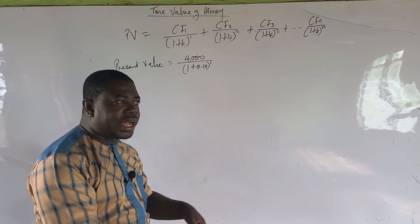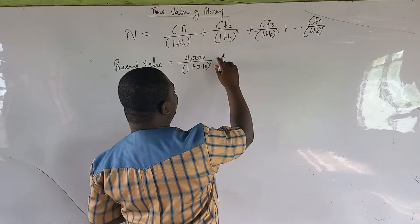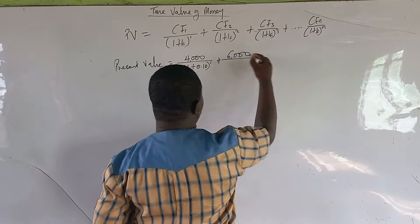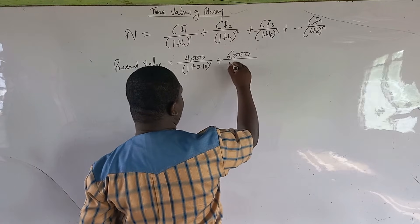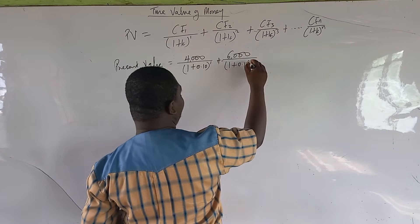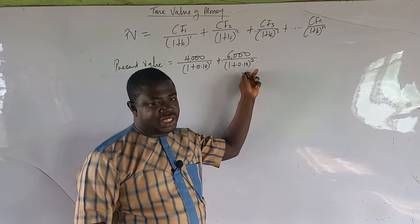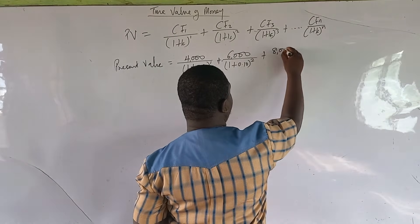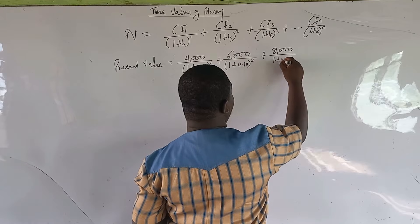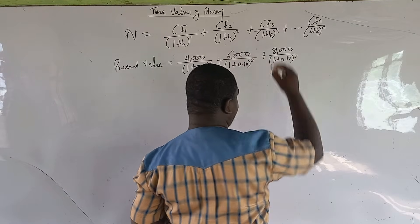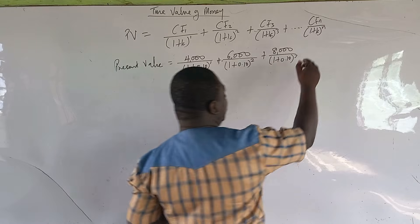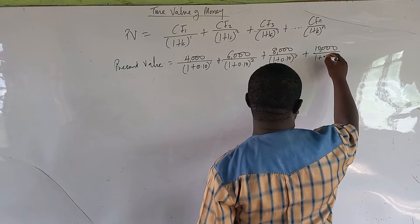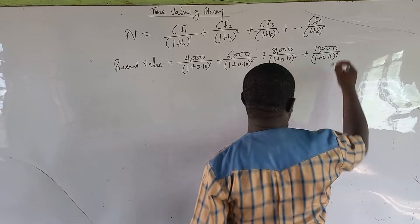In year one, the expected cash flow is 4,000 Ghana cedis divided by (1 + 0.10) raised to the power one. In year two, the cash flow is 6,000 divided by (1 + 0.10) raised to the power two. In year three, 8,000 divided by (1 + 0.10) raised to the power three. In year four, 10,000 divided by (1 + 0.10) raised to the power four.